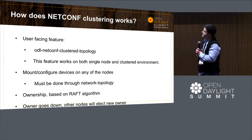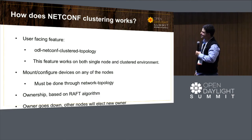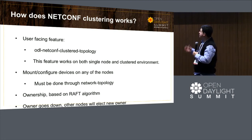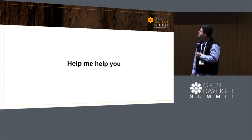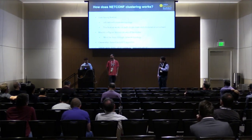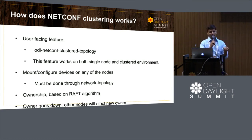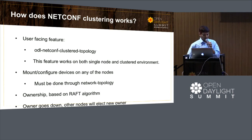It's done through network topology, so it's exposed through REST on top of the controller. Like everything else, it's built on the Raft algorithm — we use clustering from the controller project. When the owner does go down, another node will be elected to take over. A particular controller in a cluster owns a netconf device, but you can make requests to any of the controllers in the cluster, and the communication will happen from the owner controller to the device. If that goes down, through the entity ownership process the election happens and the new controller takes ownership.